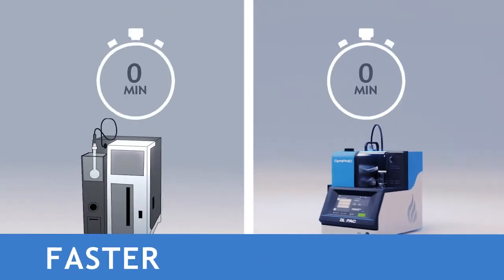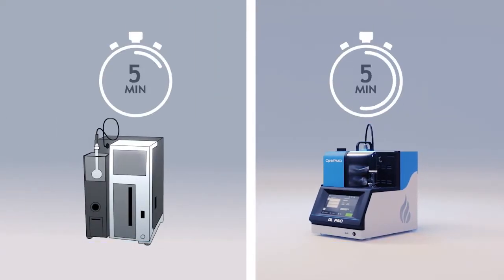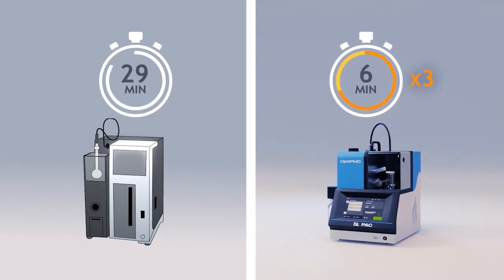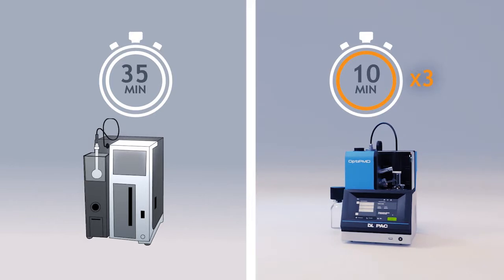OptiPMD is the fastest way to perform a distillation of petroleum products. Our analyzer saves between 25 to 35 minutes per distillation, compared to D86 analyzers.